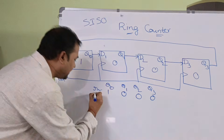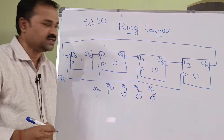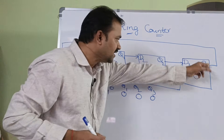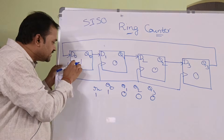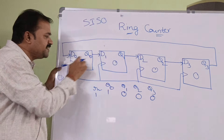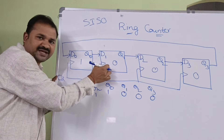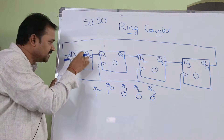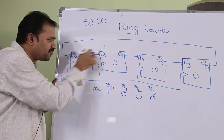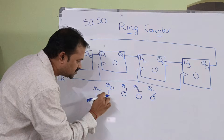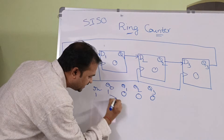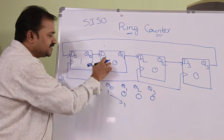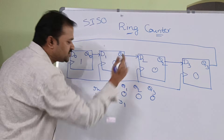Now let us apply the first clock pulse. The one stored in the first flip-flop will be shifted one position to the right. So the output of the first flip-flop is supplied as input to the next flip-flop, shifting the one here, and the zero shifts accordingly.